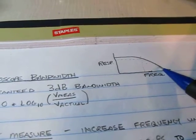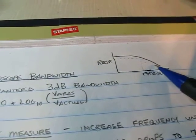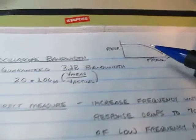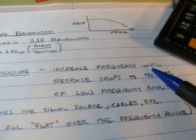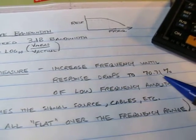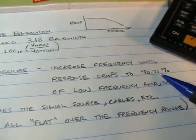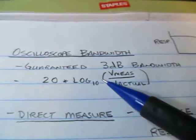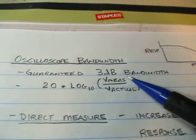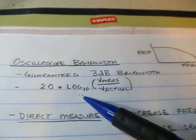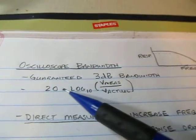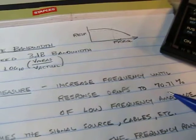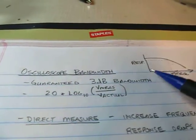Now the scope is certainly usable beyond that, but with less and less amplitude accuracy. The 3 dB point is typically what's used. The way to do the direct measure is to simply increase the frequency at the input until the response drops to 70.71%, which is 1 over the square root of 2 — the half power point, or 3 dB. We calculate it by taking the measured response divided by the actual response, taking the log base 10 of that, and multiplying by 20. When the measured response gets down to 70.71%, that gives us 3 dB.